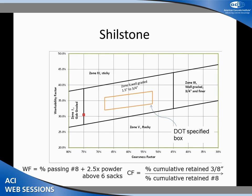I'm going to introduce just a few of them. The Shilstone box: we've got workability factor plotted on the Y axis and coarseness factor plotted on the X axis. You want to be in the box. Shilstone actually said that you don't necessarily want to be in the center — it depends on your application — but most folks have kind of forgotten that over time.